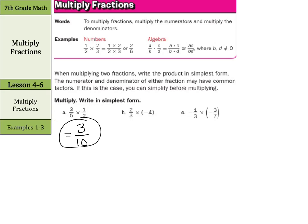Now with two-thirds times negative four, we're going to rewrite this as two-thirds times negative four over one. Look at your cross — can I simplify the two and the one? Absolutely not. The three or the negative four? No. So simply multiply: two times negative four is negative eight, three times one is three. And negative eight-thirds can simplify into negative two and two-thirds. That is our solution.